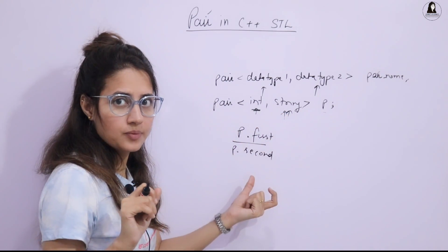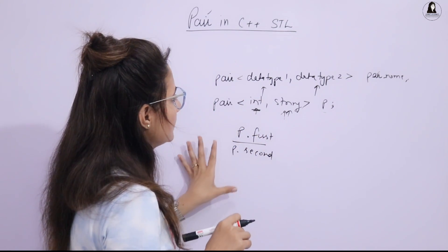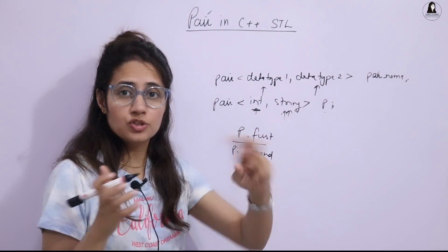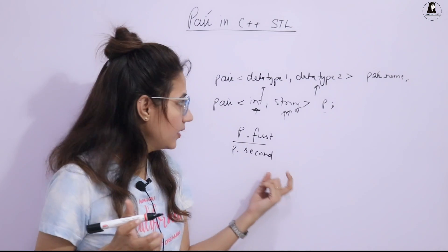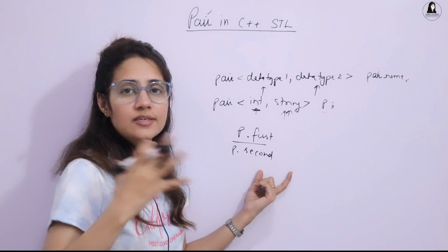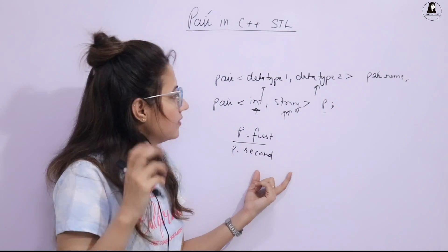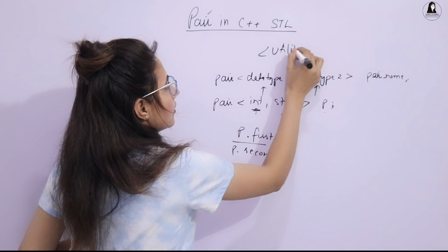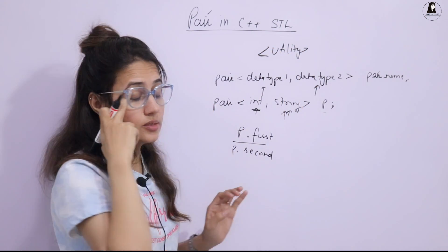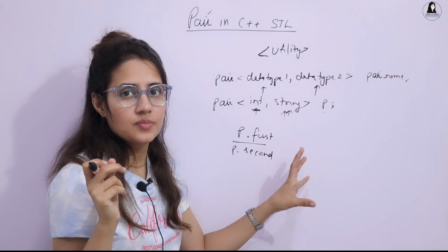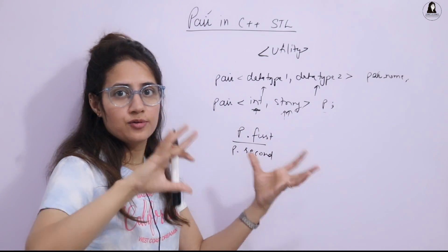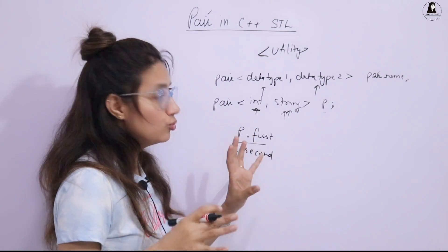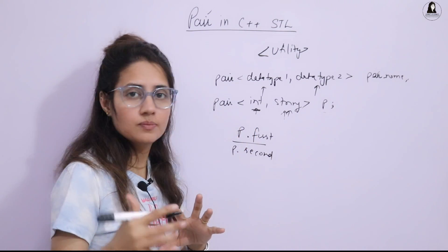Now why do we need a pair? Whenever you want to return two values from a function, we can use pair for that. Or if you want to store related values together, we can use this — like we use dictionary or tuple. The header file for pair is utility, so we include the utility header. Pair is a container class defined in STL. Pair provides a way to store two heterogeneous type objects as a single unit.